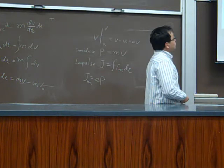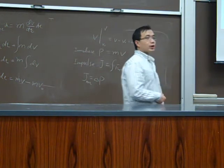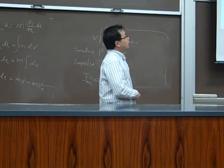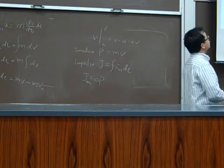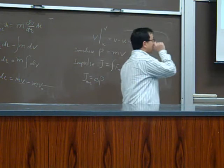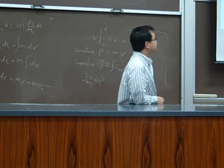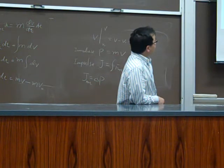And for the system, with more than one particle, the momentum, total momentum is just the vector summation of all the individual momentum. So you just add them together. That's a vector summation.